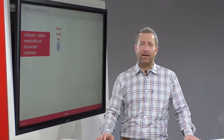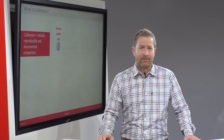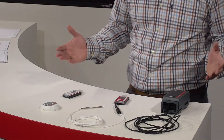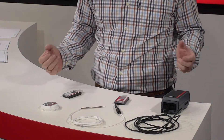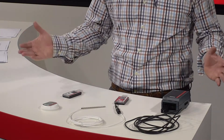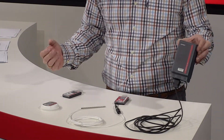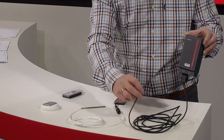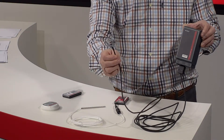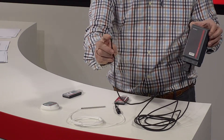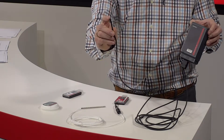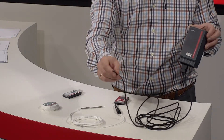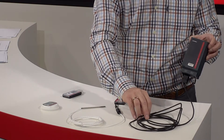What is a device under test? I have some examples here. Devices under test include a data logger — for example, a data logger mounted on a wall with an external sensor. The device under test is really the sensor sitting out here, which could be in a refrigerator or somewhere similar.